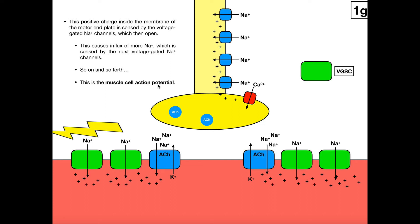It is worth mentioning that with any action potential, following the voltage-gated sodium channel opening, there's a voltage-gated potassium channel that opens as well — but that follows the voltage-gated sodium channel. The action potential is the sodium channels opening, so we're neglecting the potassium channels here for simplicity. But as soon as the first voltage-gated sodium channel opens, around the time the next one opens, a potassium channel would open allowing potassium to efflux, repolarizing the membrane. We'll talk about that more when we look at neuron physiology. But again, we have the action potential moving unidirectionally along the muscle cell membrane.